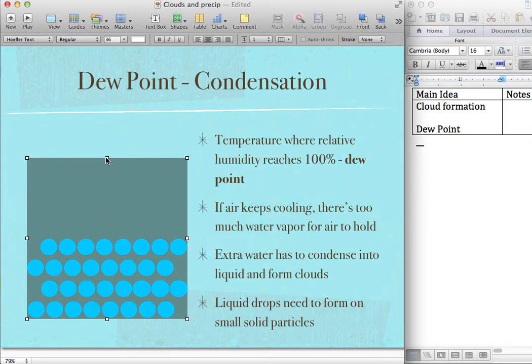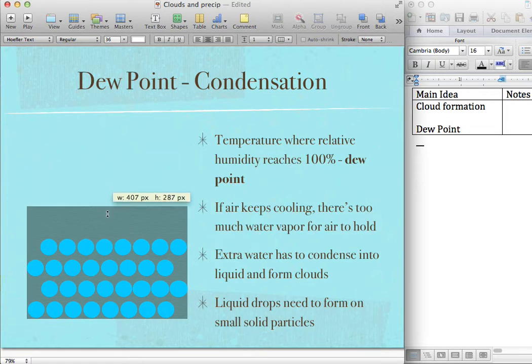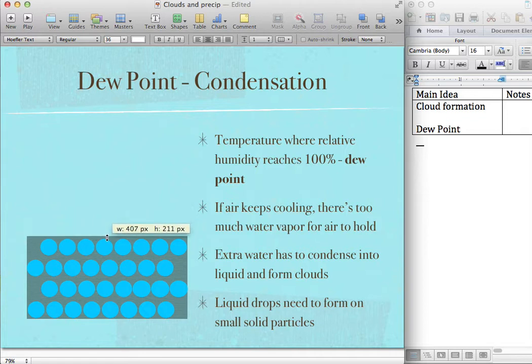As it goes up, it gets colder and colder. So our maximum amount of water goes down and down and down until we get to a particular temperature where now our humidity is 100%. That temperature is called the dew point. So it's the temperature where relative humidity reaches 100% for a particular piece of air.